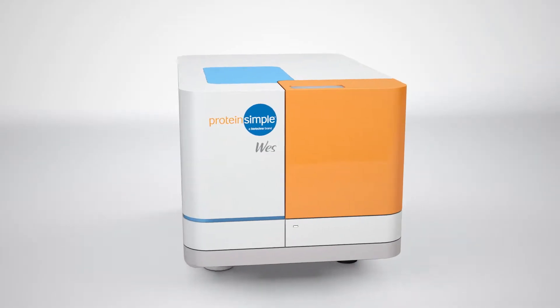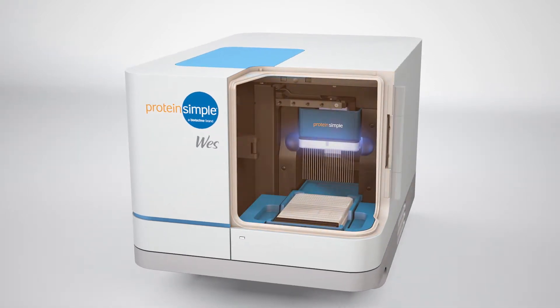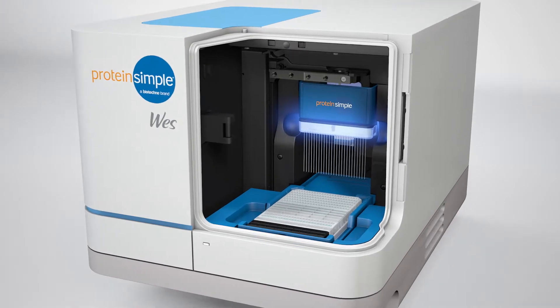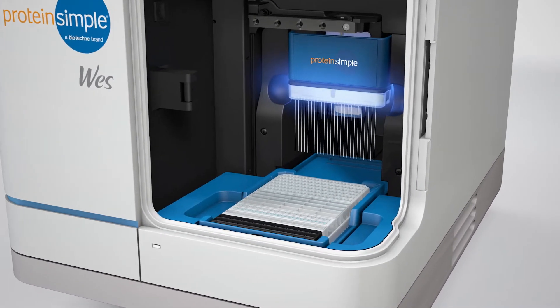Exactly how does Wes do Simple Westerns? The magic happens inside of a capillary. Each capillary cartridge can run either 13 or 25 capillaries, enabling throughput flexibility.